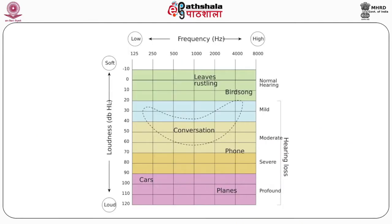Common sounds in the audiogram include leaves rustling, birdsong, normal conversation, normal phone ringing, curve moving sounds, and the sound of an aeroplane. In a normal individual, a small gap is seen between air and bone conduction thresholds, called the AC-BC gap. At any given frequency, the threshold for air conduction is somewhat lower than the bone conduction — that is, normally air conduction is greater than bone conduction.